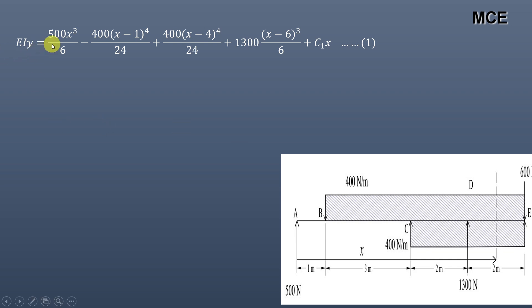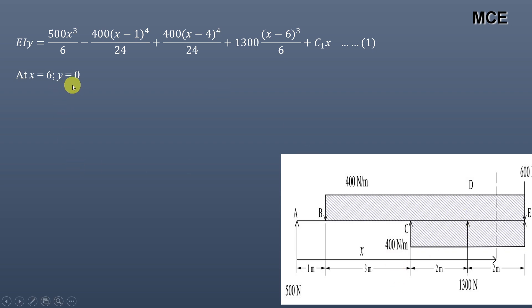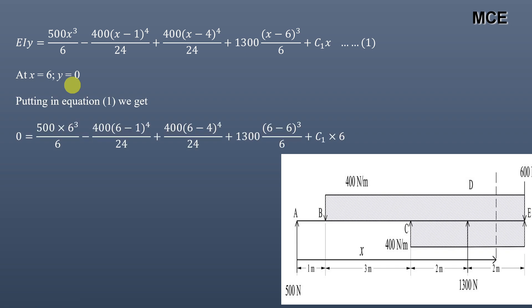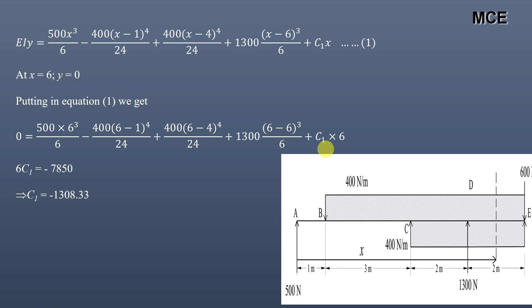With C2 = 0, the deflection equation becomes: EI·y = 500x³/6 − 400(x−1)⁴/24 + 400(x−4)⁴/24 + 1300(x−6)³/6 + C1·x. Second boundary condition: at x = 6 m (support D), y = 0. Substituting x = 6: 500(6)³/6 − 400(5)⁴/24 + 400(2)⁴/24 + 1300(0)³/6 + 6C1 = 0, giving C1 = −13080.33.